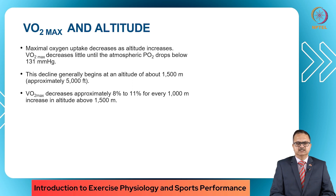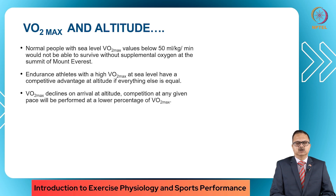This decrease is approximately 8 to 11 percent for every 1000 meter increase in altitude above 1500 meters. This implies that normal people who have VO2 max levels below 50 ml per kg per minute will not be able to survive without supplemental oxygen at Mount Everest. Endurance athletes who have a high VO2 max at sea level have a competitive advantage at altitude. VO2 max declines on arrival at altitude, and hence competition at any given pace will be performed at a lower percentage of VO2 max.